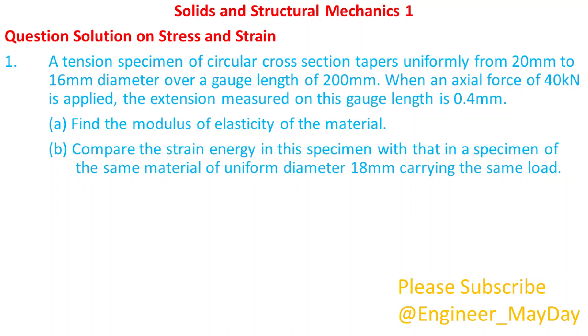A tension specimen of circular cross-section tapers uniformly from 20mm to 16mm diameter over a gauge length of 200mm. When an axial force of 40 kN is applied, the extension measured on this gauge length is 0.4mm.